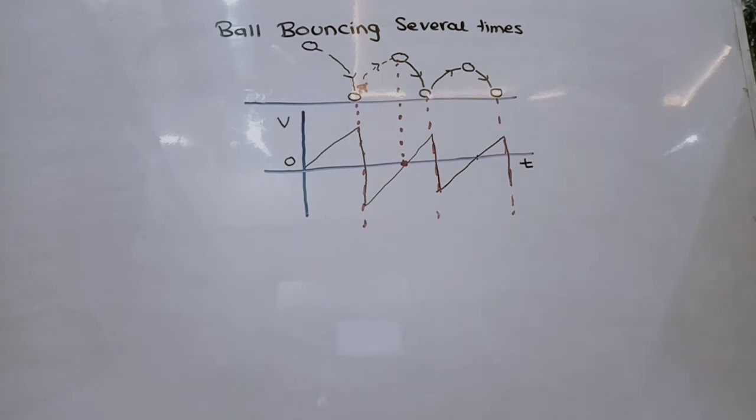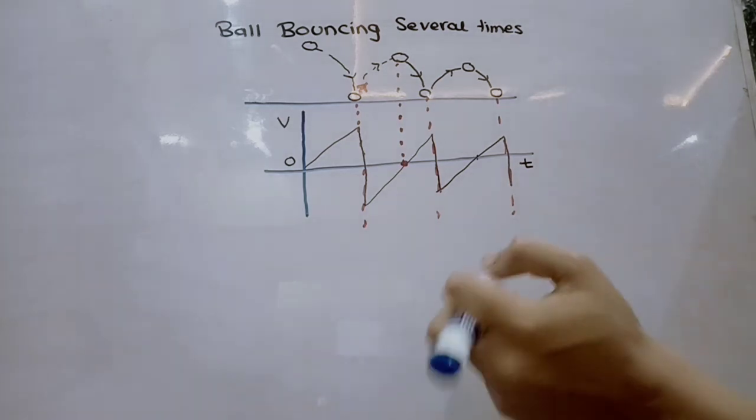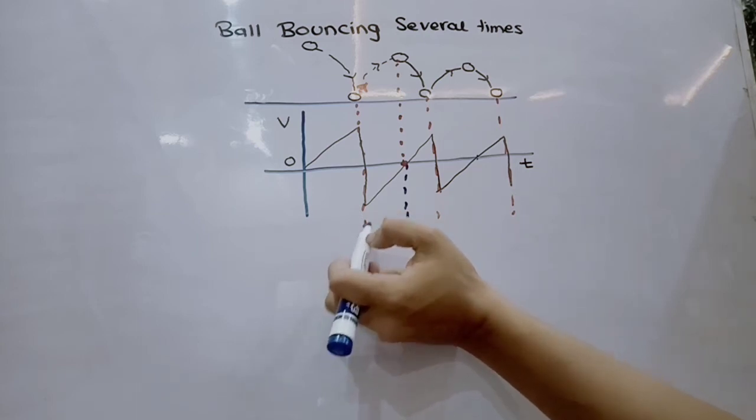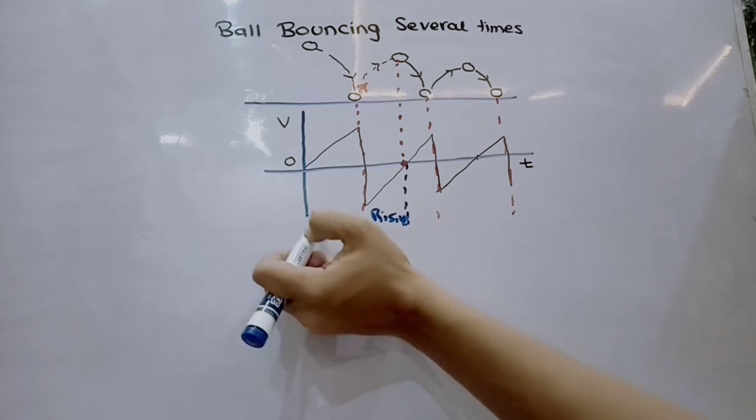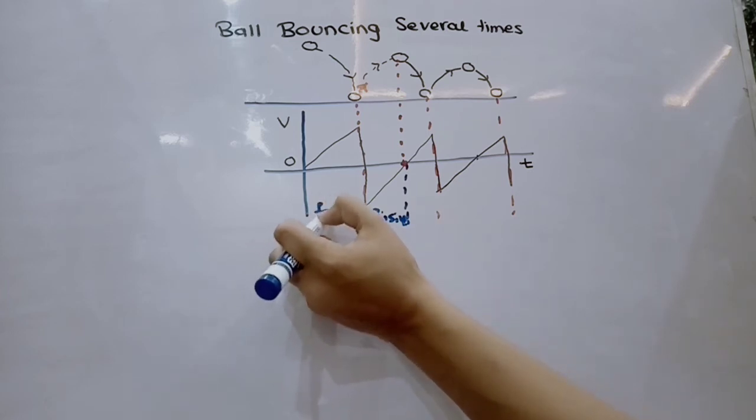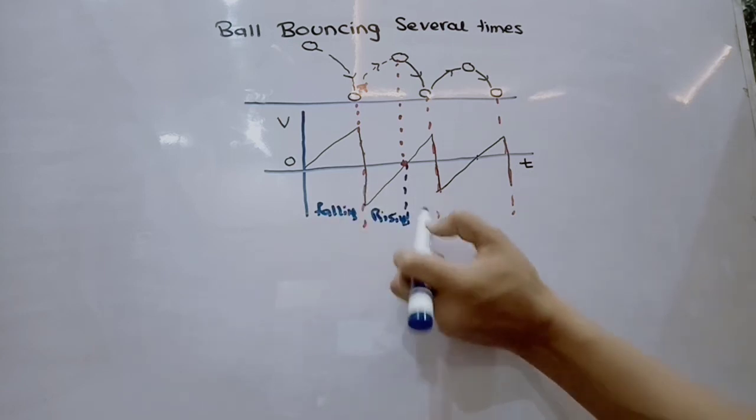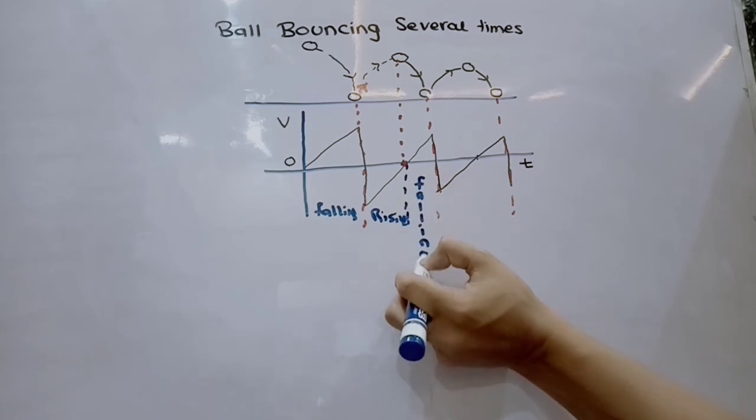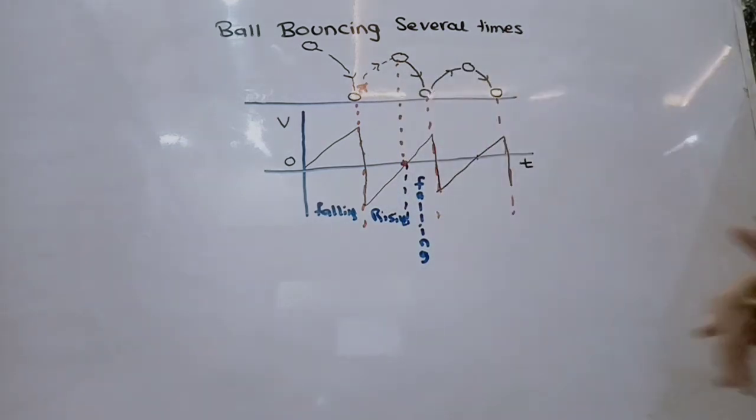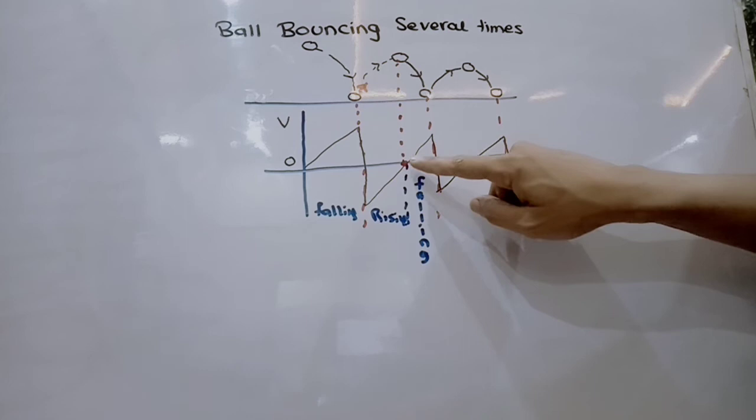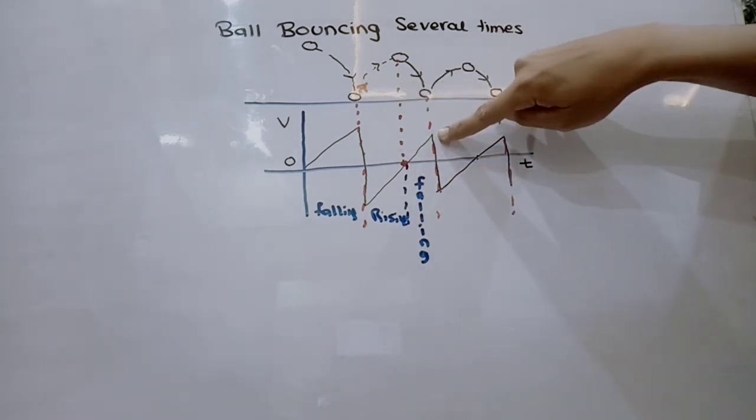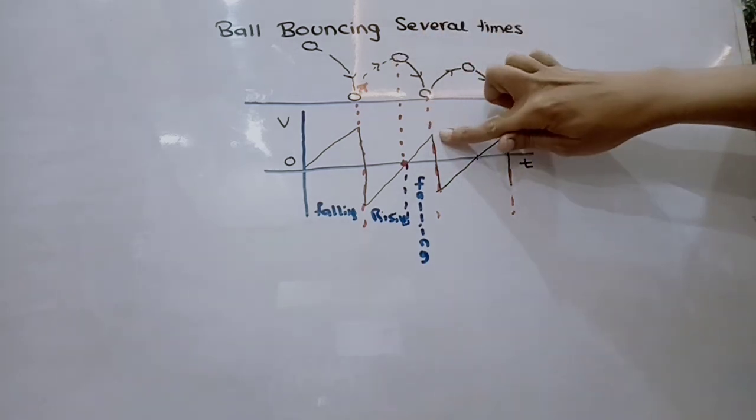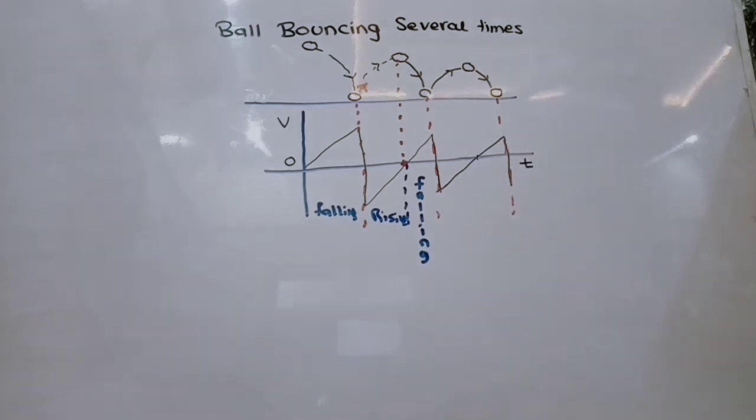We can label this: in this interval it was rising, in this interval it was falling, and again in this interval it's falling. Now you must realize that this peak velocity is less than the previous. As the height decreases, the velocity decreases. Kinetic energy also decreases, so the velocity must decrease.